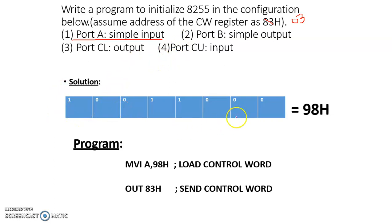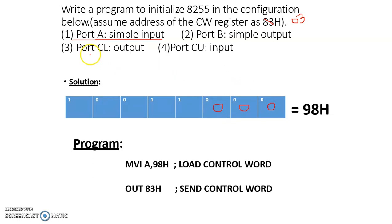To generate the control word register bit pattern: the LSB bit — Port C lower is output, so bit 0 = 0. Port B is output, so the corresponding bit = 0. The mode selection for Port B is mode 0, so bit = 0. Port C upper is input, so the corresponding bit = 1. Port A is input, so the Port A input/output bit = 1.